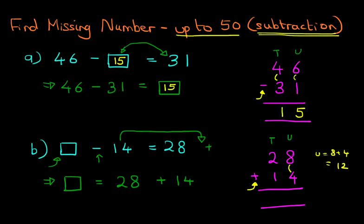8 plus 4 is 12. We can write this down: 1 and 2. That is 12. Now onto the tens. We've got 2 plus 1. 2 plus 1 is 3, plus the 1 we have carried over. 3 plus 1 is 4. And that's our answer, 42.